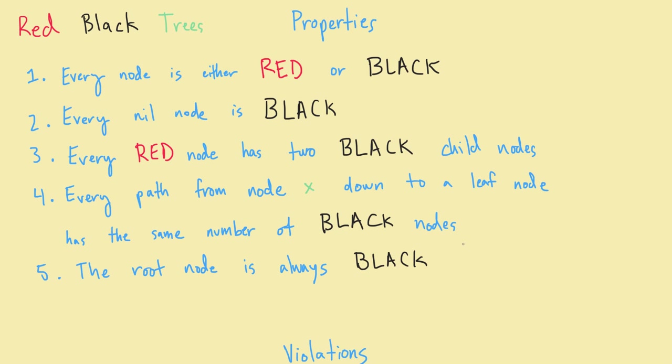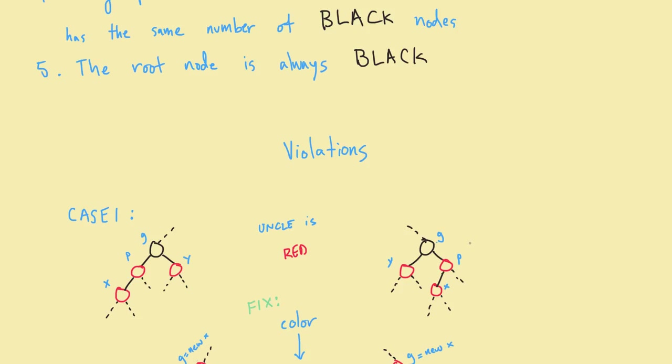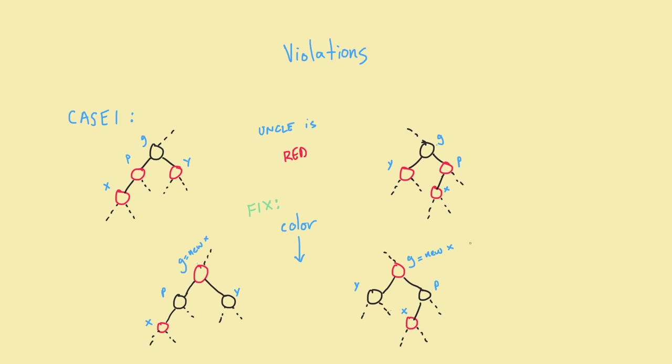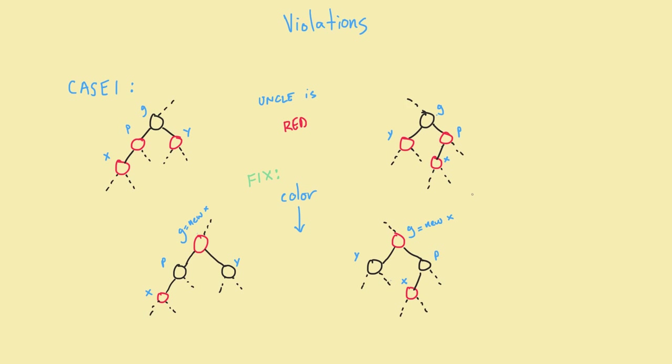So we can look at some of the violations. Most of them, the ones that we're going to talk about, are violating the property where a red node cannot have a red child node. And this comes about typically when you're inserting. So let's say that we insert this node X. This is the node that we're interested in, right here. Same thing over here. So these two top ones is what we're looking at.